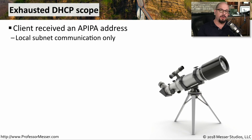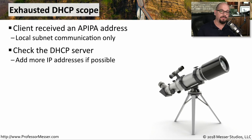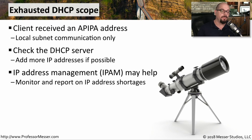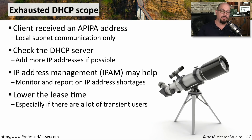When you manage a DHCP server, you create a pool with a certain number of available IP addresses. If you run out, devices will not be able to get an IP address from the DHCP server and will assign themselves an APIPA address. If devices are assigning themselves APIPA addresses, check your DHCP server to make sure you have enough addresses available, and if possible add more to the pool. To avoid exhausting a DHCP scope, implement IP address management (IPAM) to monitor your pool. If you have many transient users, lower your lease time so addresses are released faster and more are available.